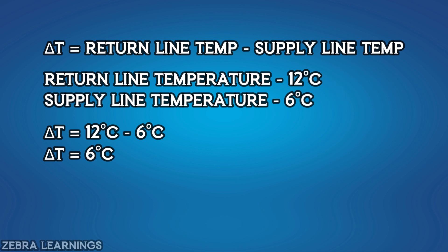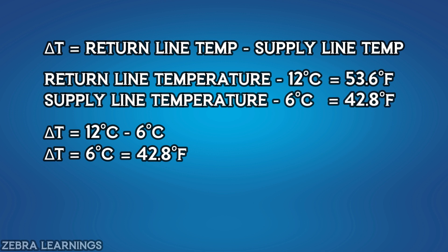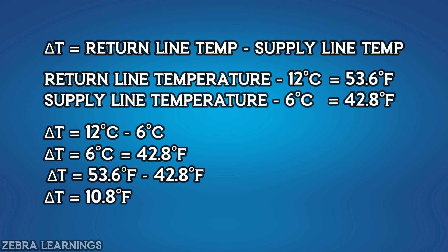For example, the supply temperature of 6 degrees Celsius has a Fahrenheit value of 42.8 degrees Fahrenheit. Let's convert both return and supply temperatures to Fahrenheit: return temperature is 53.6 degrees Fahrenheit and supply temperature is 42.8 degrees Fahrenheit. The difference is 53.6 minus 42.8, which equals 10.8 degrees Fahrenheit.